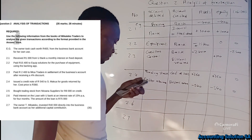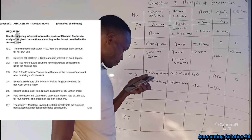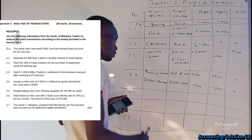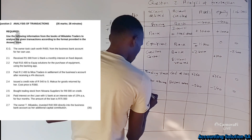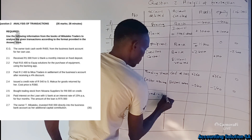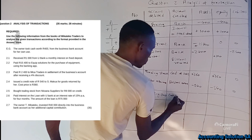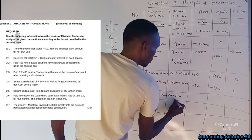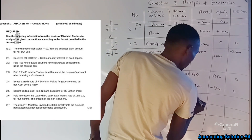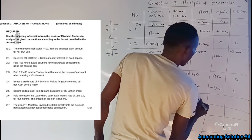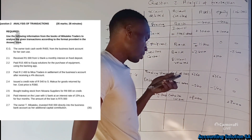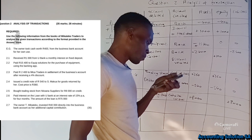Transaction 2.5: bought trading stock from Corner Supplier for R8,000. Trading stock (inventory) is increasing — assets increase on the debit side. Creditors Control (liability) also increases because we purchased on credit. So inventory is plus R8,000 and creditors control is plus R8,000.